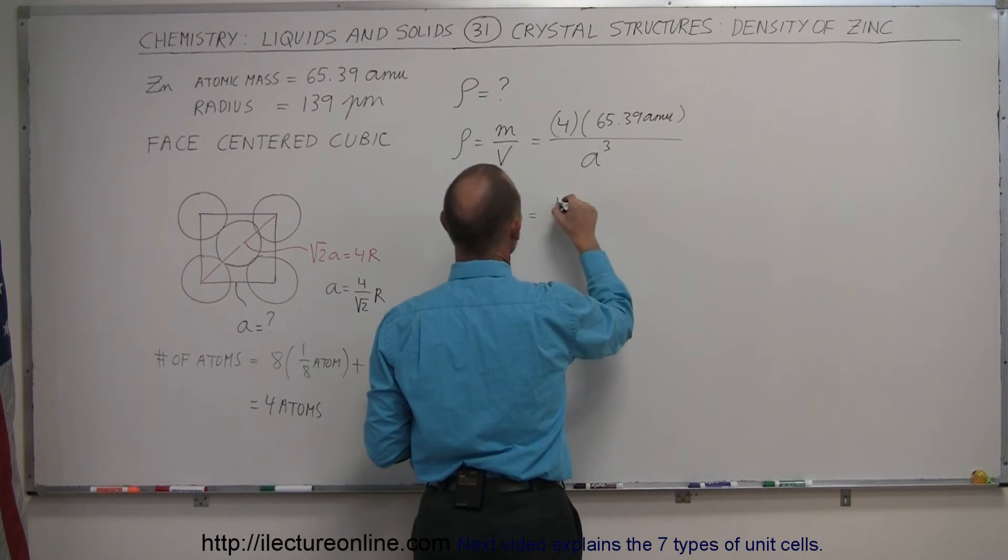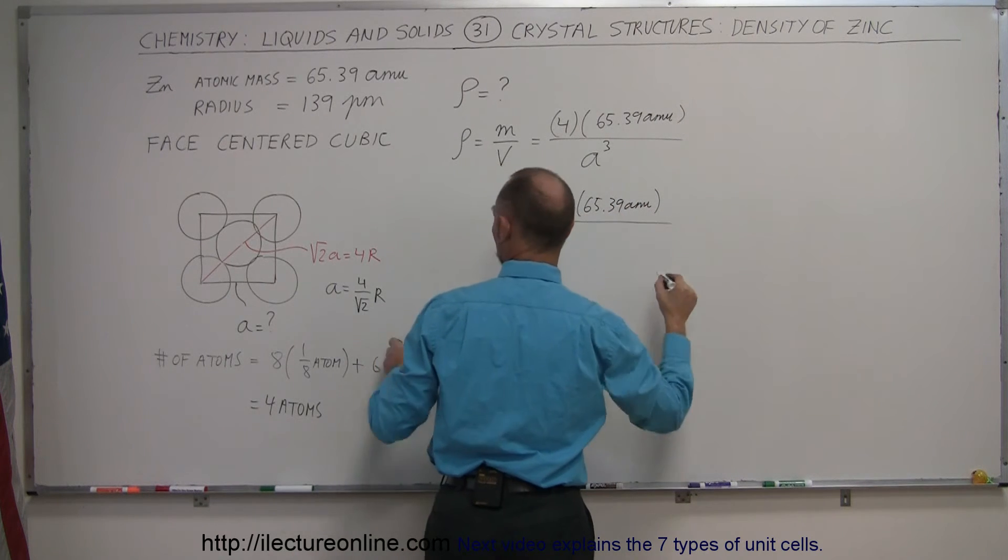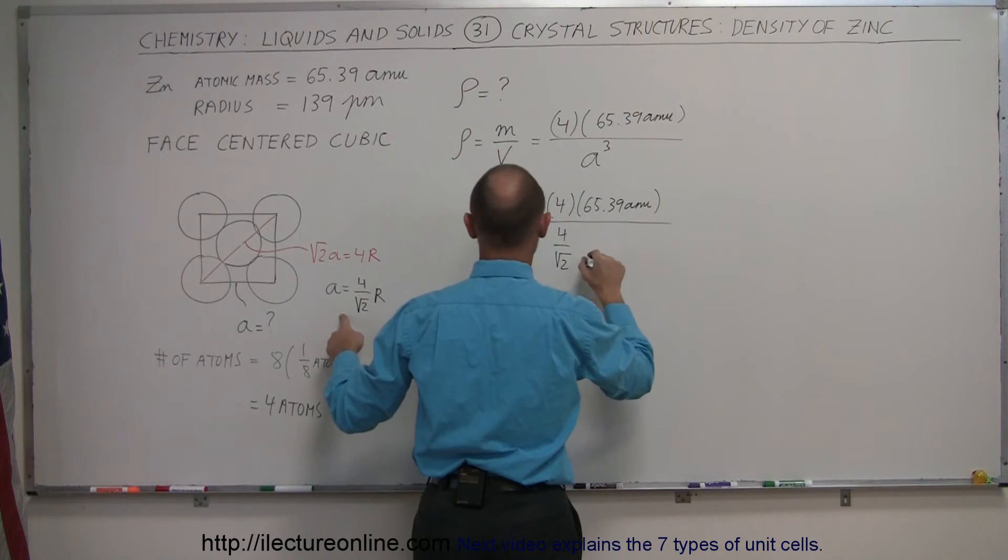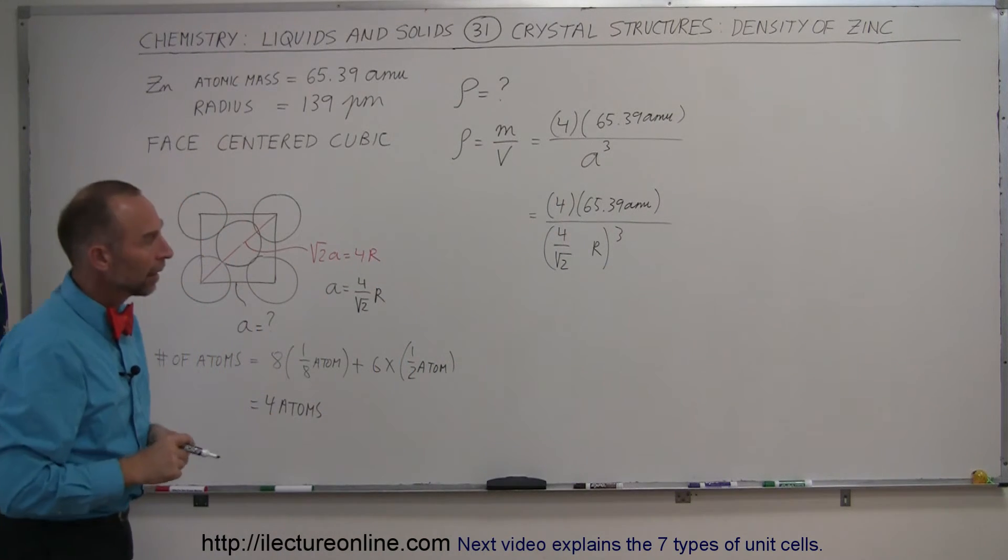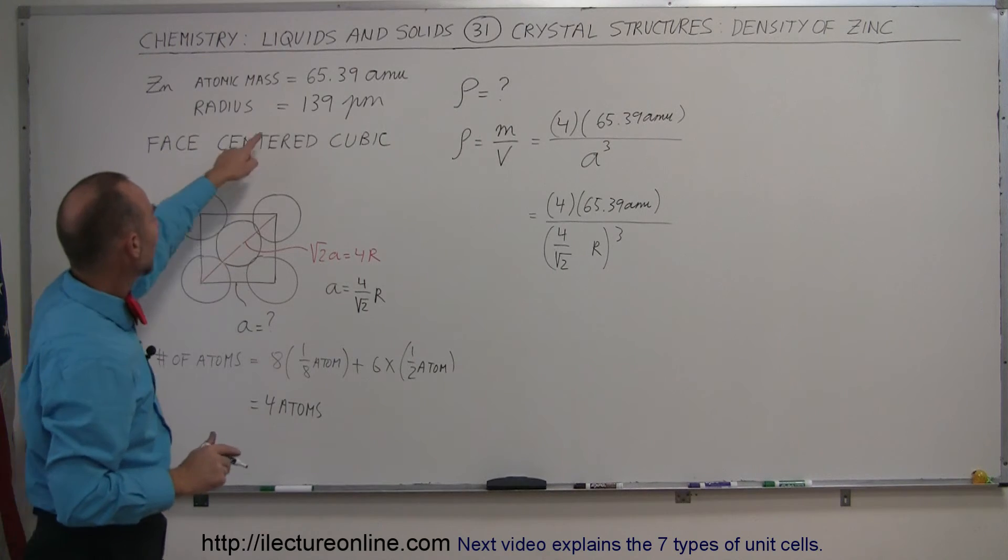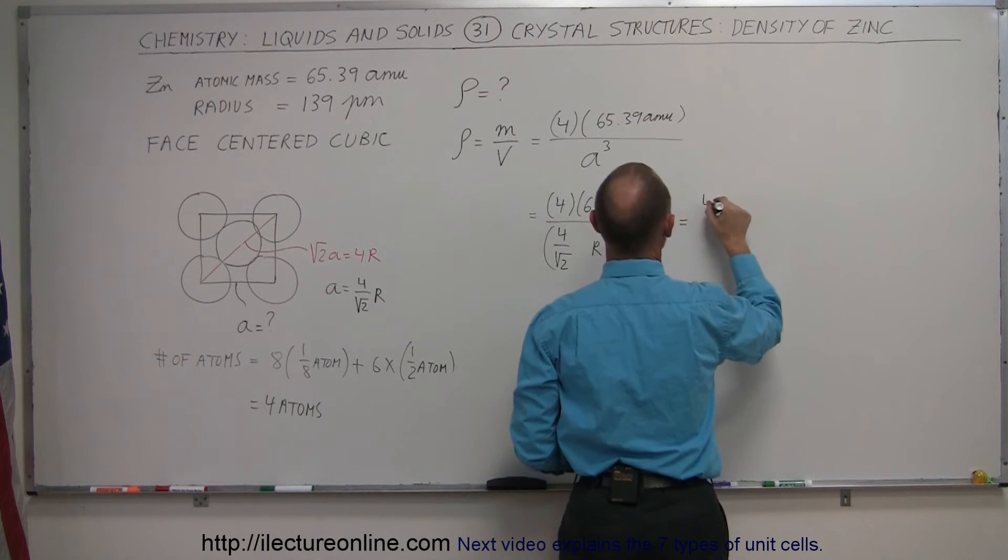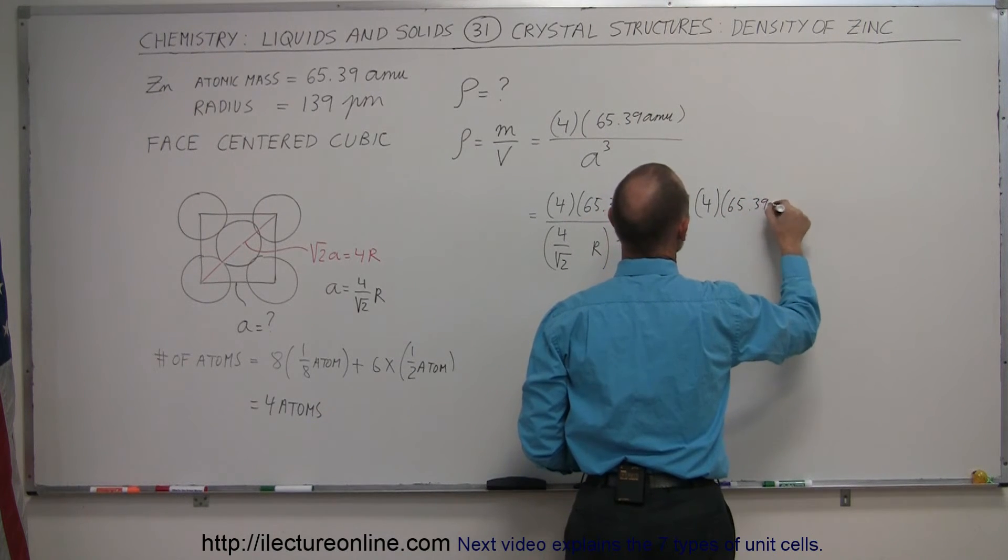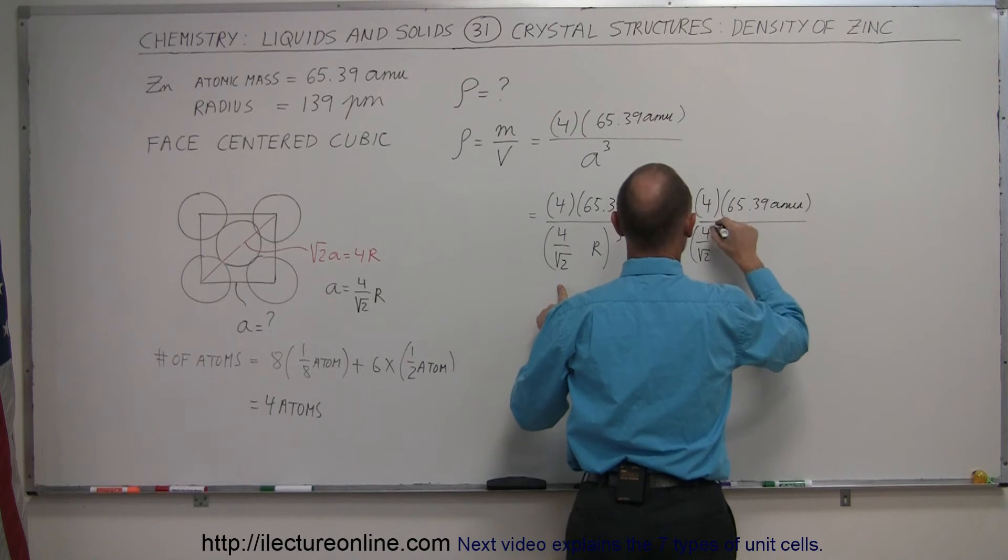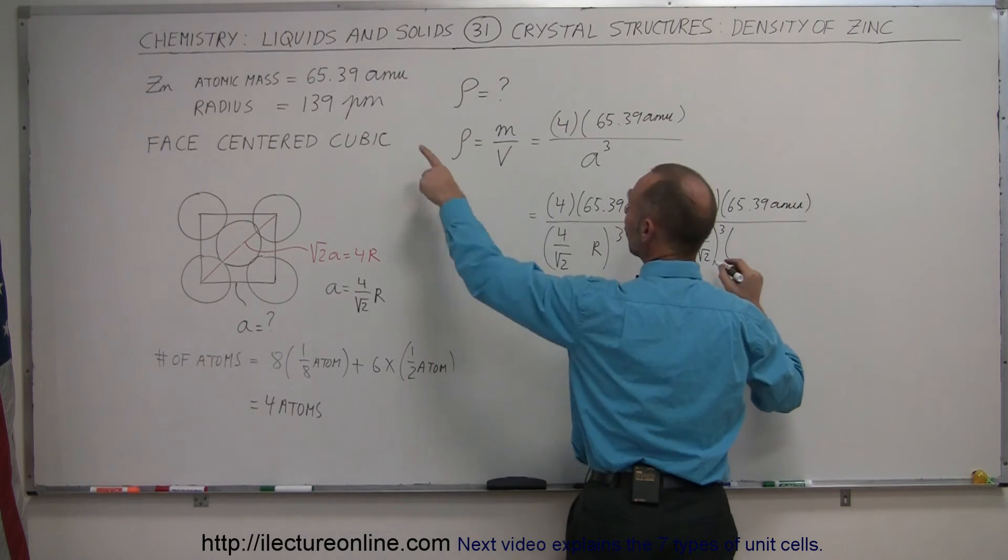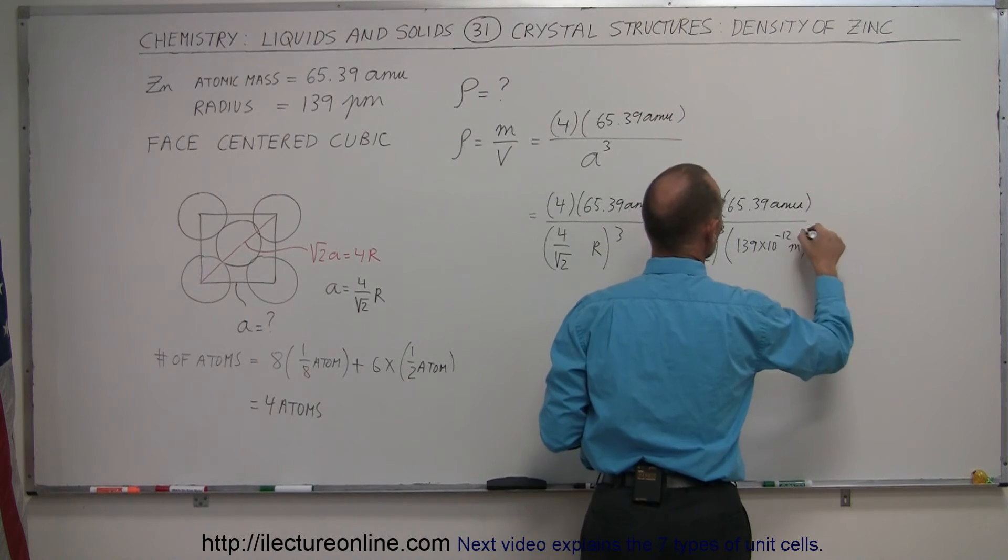So this is equal to four times 65.39 AMU, divided by four divided by the square root of 2 times the radius, and that, of course, the whole thing would have to be cubed, because that's the side cubed. I think we're ready now to plug in the radius, which is known to be 139 picometers for zinc. So this is equal to four times 65.39 AMU, divided by four divided by the square root of 2, that would be cubed, multiply times the radius cubed, and the radius is 139 times 10 to the minus 12, that would be meters, and that would be cubed.